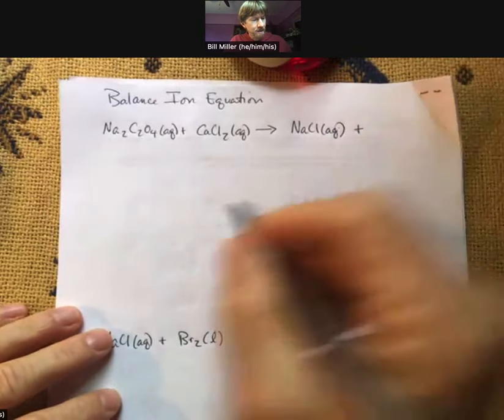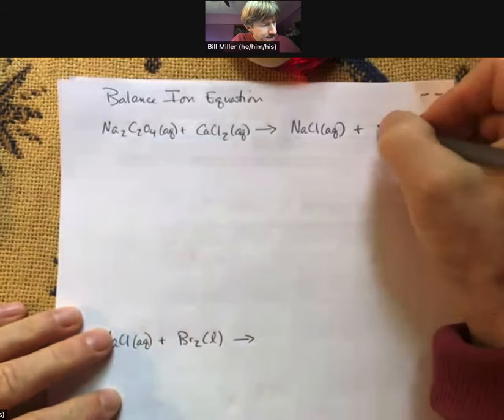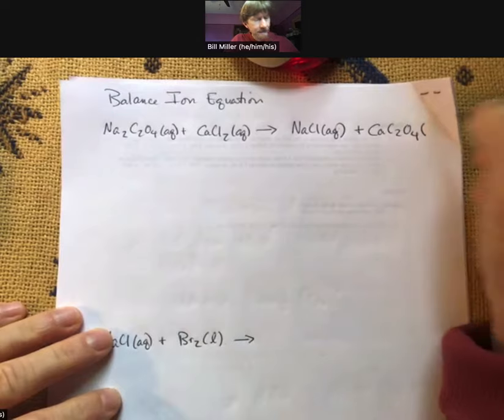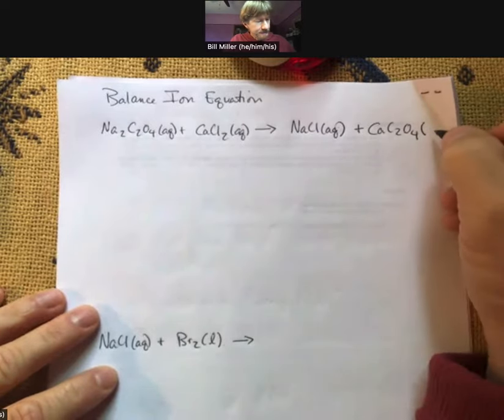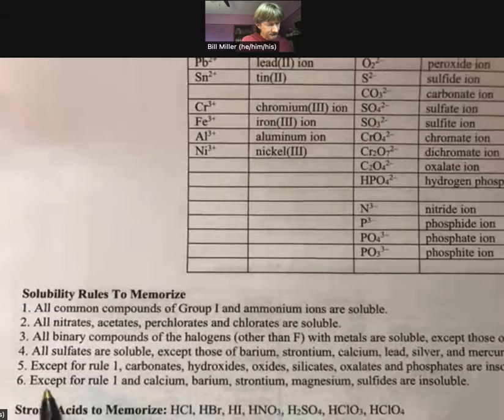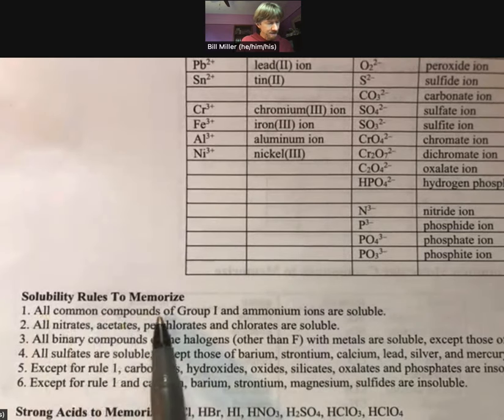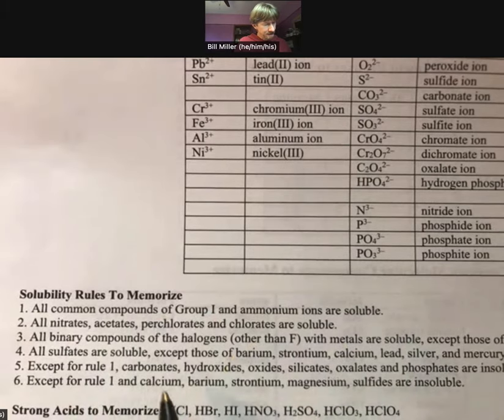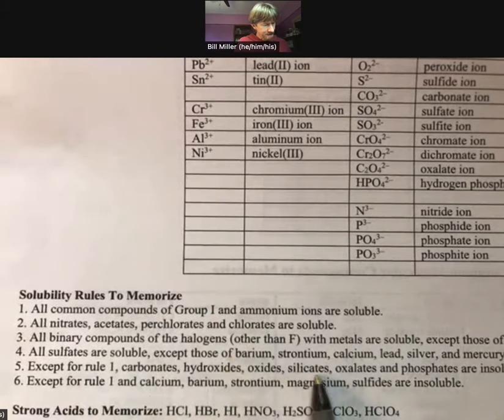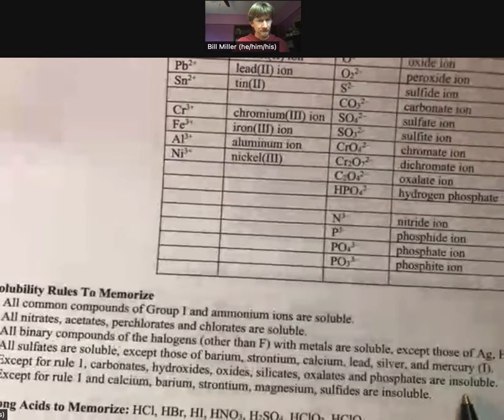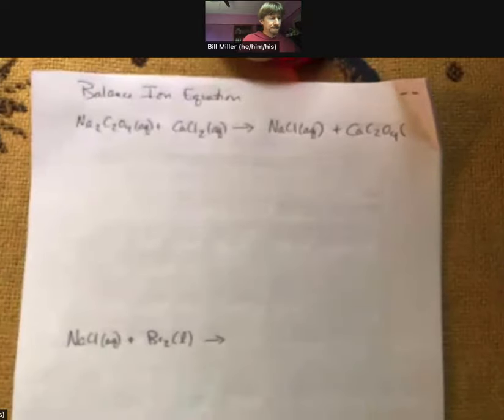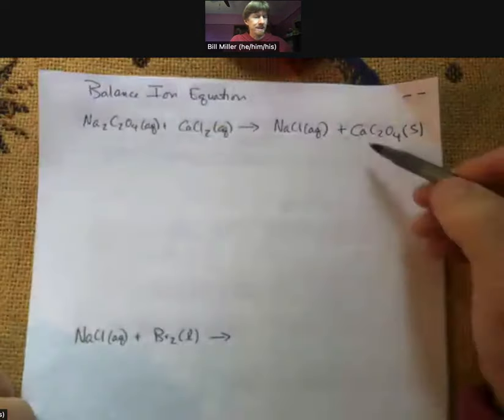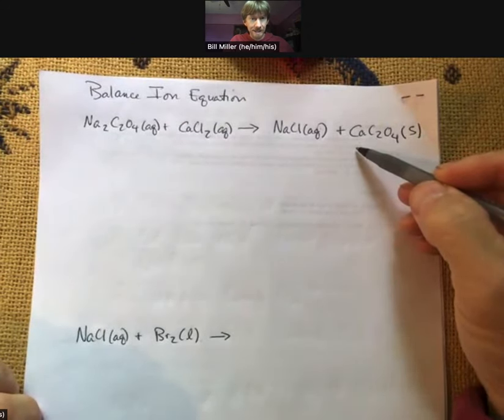Our other compound is going to take our calcium and pair it with our oxalate. Calcium is plus two, oxalate is minus two, so those balance each other. Then we look on our list and it says except for rule number one, which says that all common compounds of group one and ammonium are soluble, carbonates, hydroxides, oxides, silicates, and oxalates are insoluble. Insoluble means it's going to be solid. Since calcium is not in group one, it's going to be solid and insoluble.